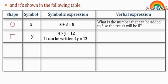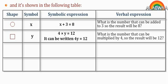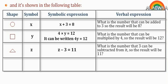The verbal expression for 4y equals 12: what is the number that can be multiplied by 4 so the result will be 12? The shape triangle is equivalent to the symbol z; the symbolic expression is z minus 3 equals 11. The verbal expression: the number that if we subtract 3 from it, the result will be 11. The shape rectangle is equivalent to the symbol l.